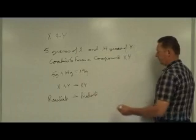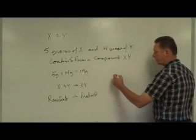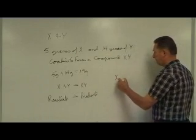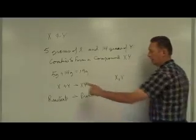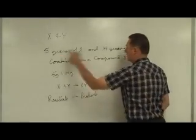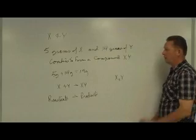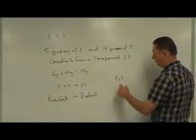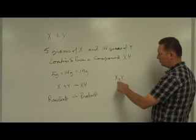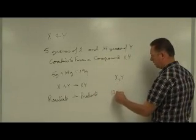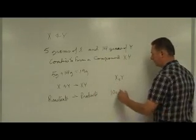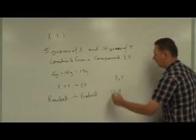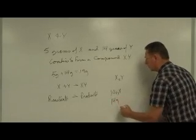If I look at that, if I'm going to make X₂Y, and XY was made of 5 grams of that and 14 grams of that, then we're going to extend a little bit into that. The initial one had 5, so that one's going to have to have 10 grams of X and 14 grams of Y.